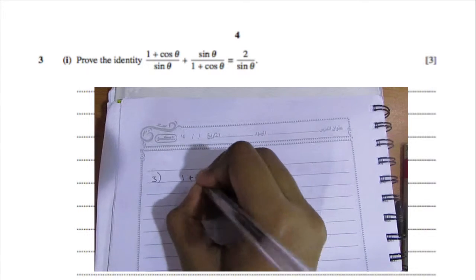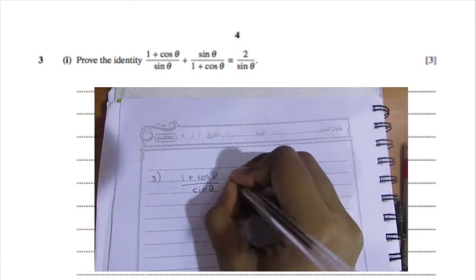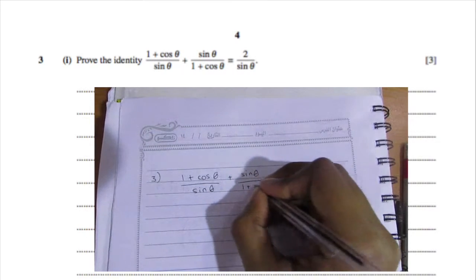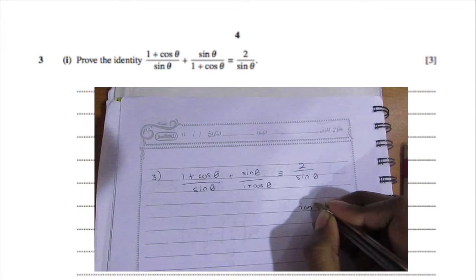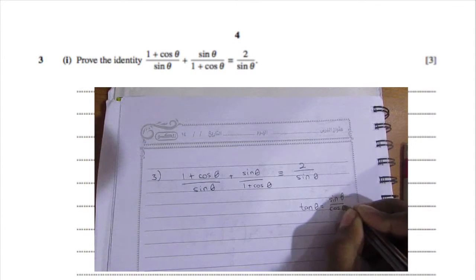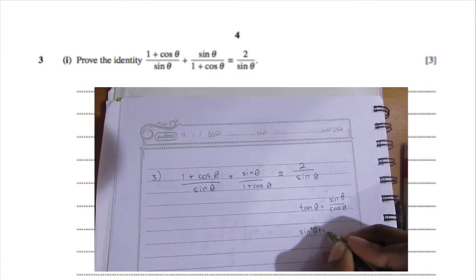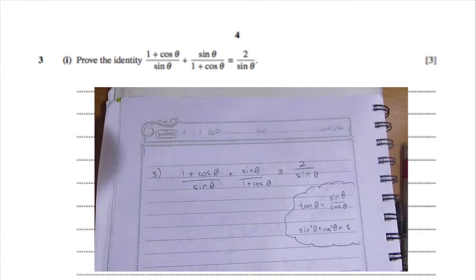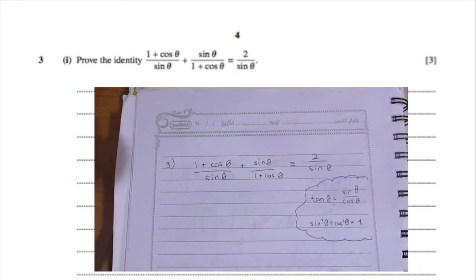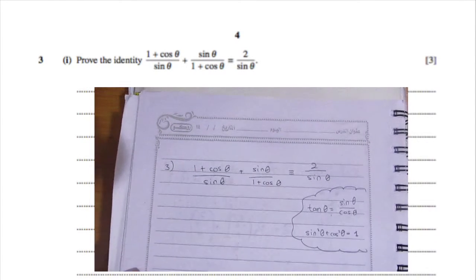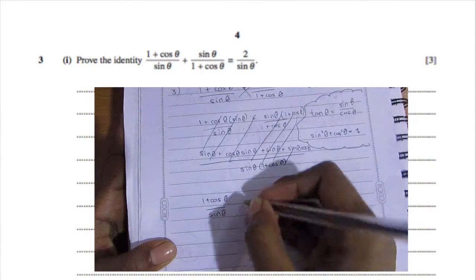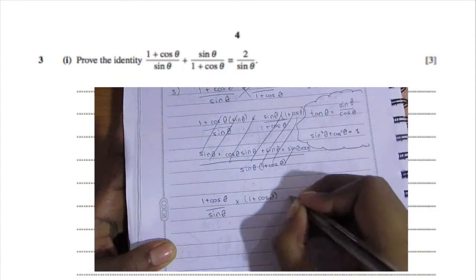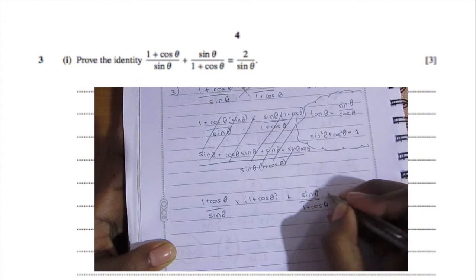Question three: prove the identity (1 + cosθ)/sinθ + sinθ/(1 + cosθ) ≡ 2/sinθ. Key rules to remember: tanθ = sinθ/cosθ, and sin²θ + cos²θ = 1. First, find a common denominator. Multiply the first fraction by (1 + cosθ) and the second by sinθ to get the same denominator of sinθ(1 + cosθ).